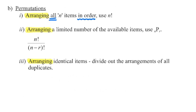If the order matters, we have a permutation. Anytime you see the word 'arrange,' the order matters and it's going to be a permutation. If we are arranging all objects, we can use n factorial, going down to the last object. If we are arranging a limited number, we use the NPR formula — how many objects are available put into how many positions. With permutations, if we are arranging duplicate or identical items, we must divide out the duplicates to find the number of distinct arrangements.